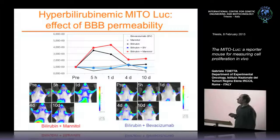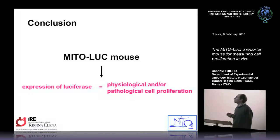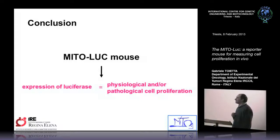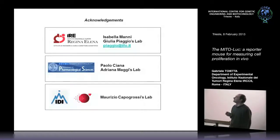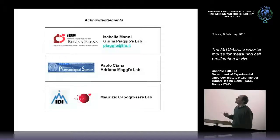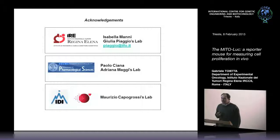That's essentially what I have to share today. The conclusion is that we have developed a mouse in which luciferase expression is associated with both physiological and pathological cell proliferation. We believe this is a very useful animal for different experimental conditions. I also want to acknowledge the collaborations that helped us in developing this mouse and using it in different experimental settings. Thank you for your attention.